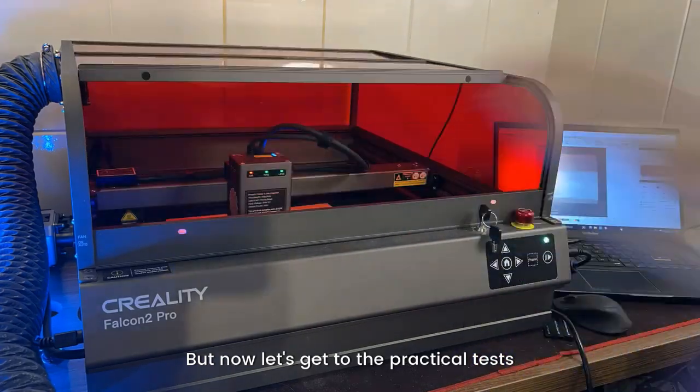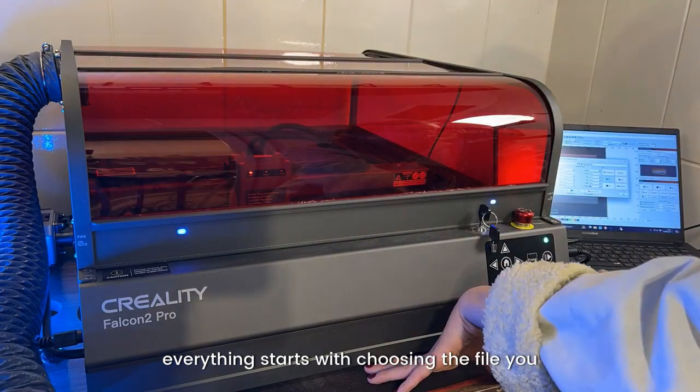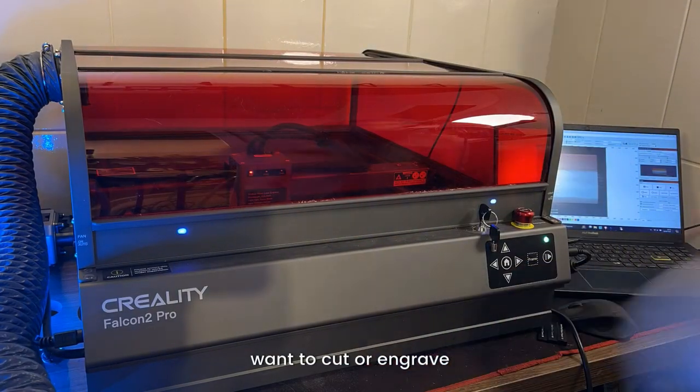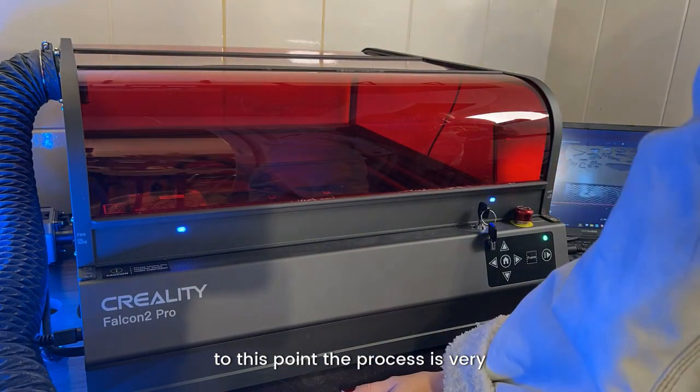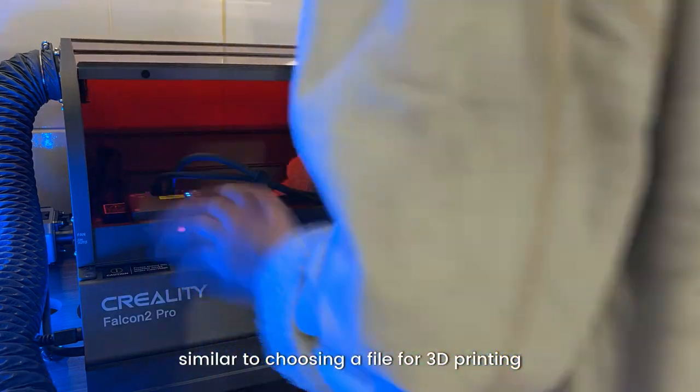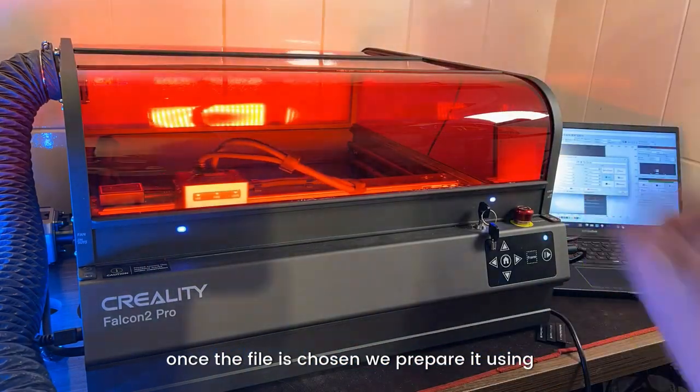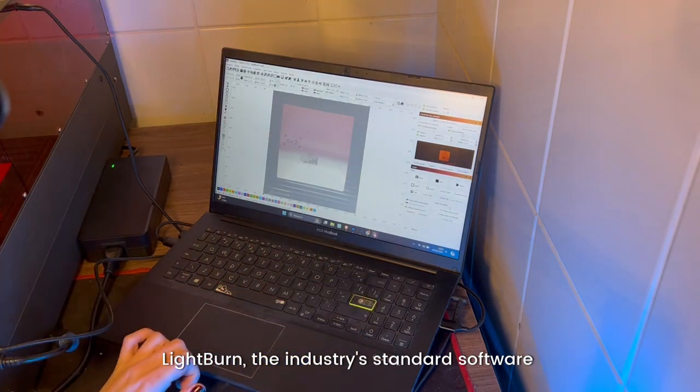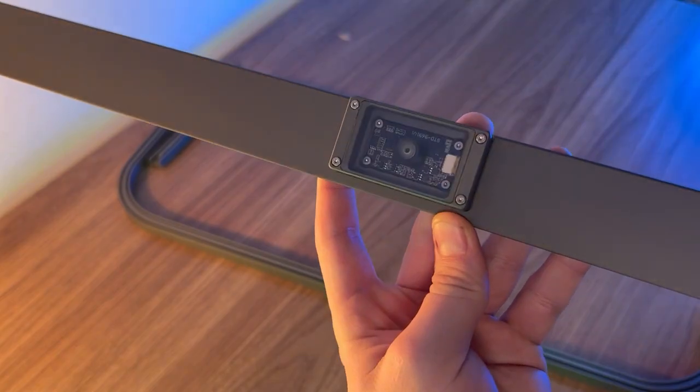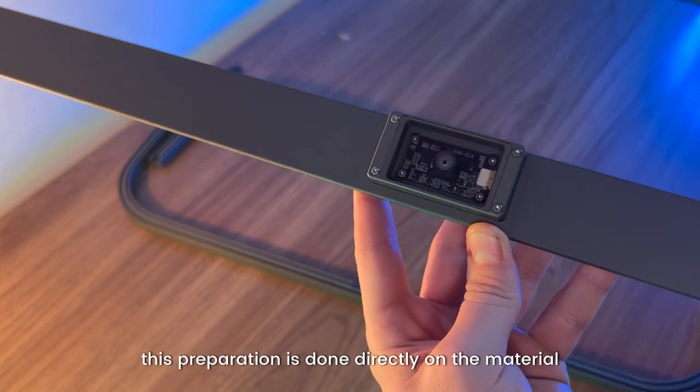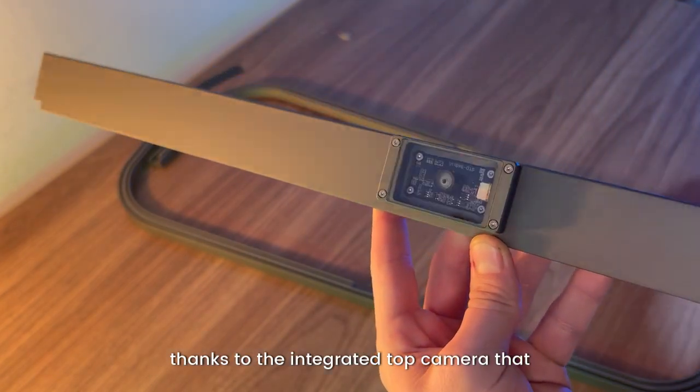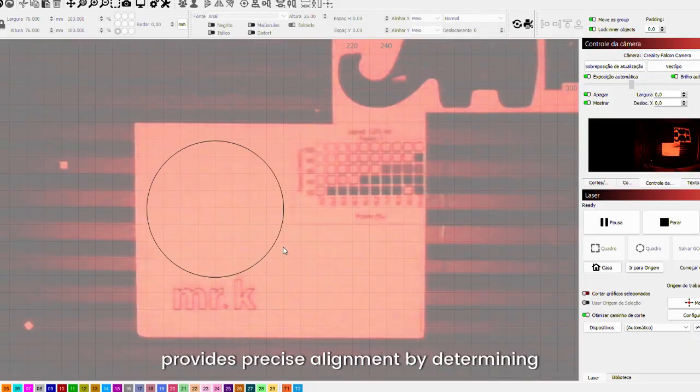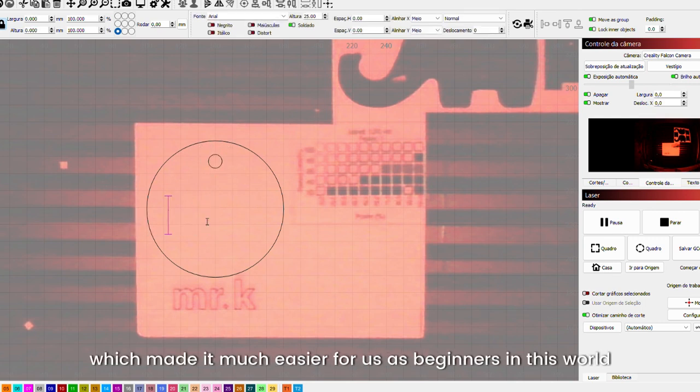But now let's get to the practical tests. Everything starts with choosing the file you want to cut or engrave. The process is very similar to choosing a file for 3D printing. Once the file is chosen, we prepare it using LightBurn, the industry standard software for operating lasers. This preparation is done directly on the material thanks to the integrated top camera that provides precise alignment by determining where your material is, which made it much easier for us as beginners.